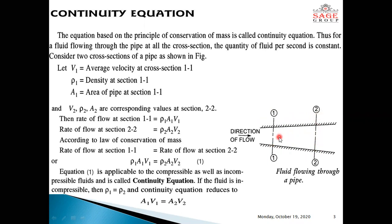Then, the rate of flow at section 1-1 is rho 1 times A1 times V1, for compressible fluid. And the rate of flow at section 2-2 is rho 2 times A2 times V2. According to the law of conservation of mass, the rate of flow at section 1-1 is equal to the rate of flow at section 2-2. So we can say that rho 1 A1 V1 equals rho 2 A2 V2. This equation is applicable for compressible as well as incompressible fluids and is called the continuity equation.